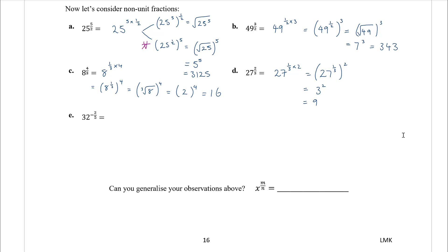Part e: thirty-two to the power of negative two fifths. Now we're combining negative and fractional indices. The negative power means we take the reciprocal of the base, so this becomes one over thirty-two to the power of two fifths. Thirty-two to the power of two fifths is thirty-two to the power of one fifth, all squared. The fifth root of thirty-two is two, so we have two squared, giving a quarter.